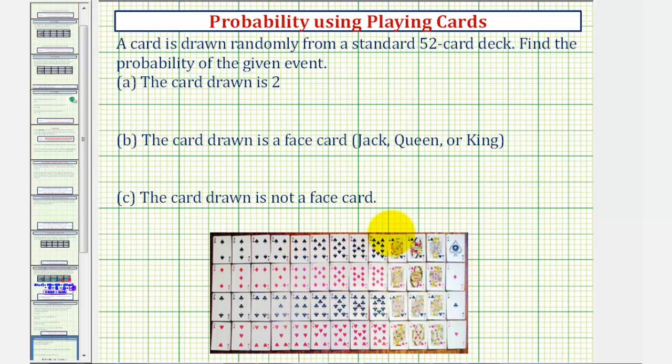Then we have the face cards, which are the jacks, queens, and kings. And finally, we have the aces.